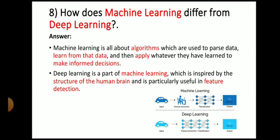Next question: how does machine learning differ from deep learning? The answer is, machine learning is all about algorithms which are used to data, learn from the data, and then apply whatever they have learned to make informed decisions. Deep learning is a part of machine learning which is inspired by the structure of human brain and is particularly useful in feature detection.